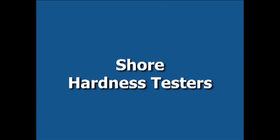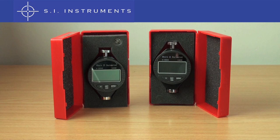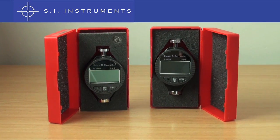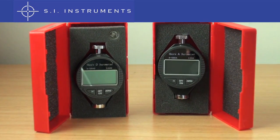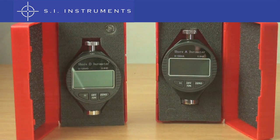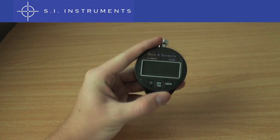The Shore Hardness Testers are available in two models, the Shore A for rubber and soft plastics and the Shore D for hard plastics. The model we have here is the Shore A Durometer.